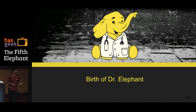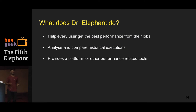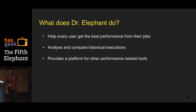This gave birth to Dr. Elephant — a self-serve performance monitoring and tuning tool for jobs you run on the cluster. It helps every user get the best performance out of their job. Users running Pig, Hive, or Spark jobs can go to Dr. Elephant, search for their job, get insights into how it performed, and receive suggestions on what parameters to change to improve efficiency and speed. You can also compare and analyze historical executions.